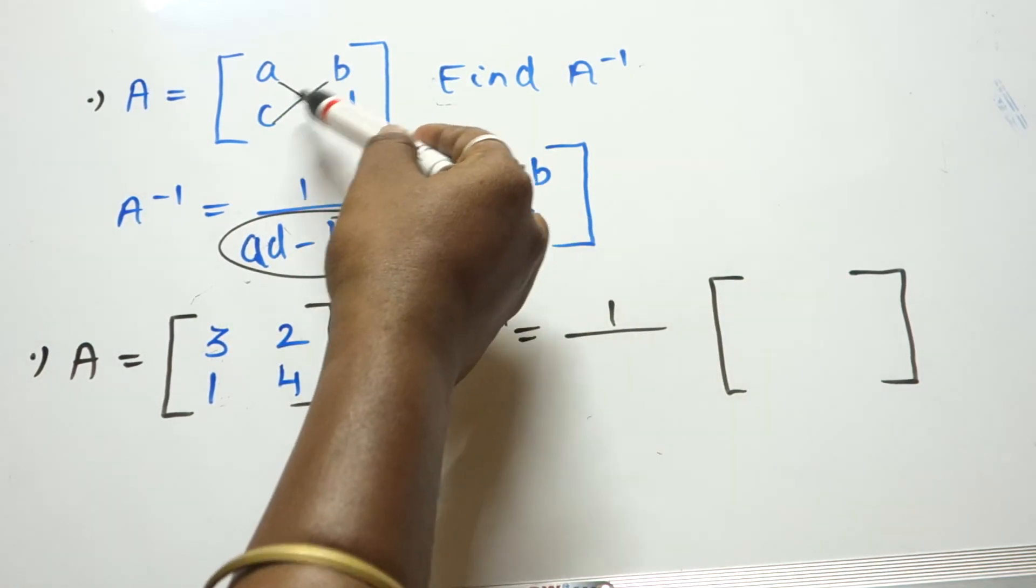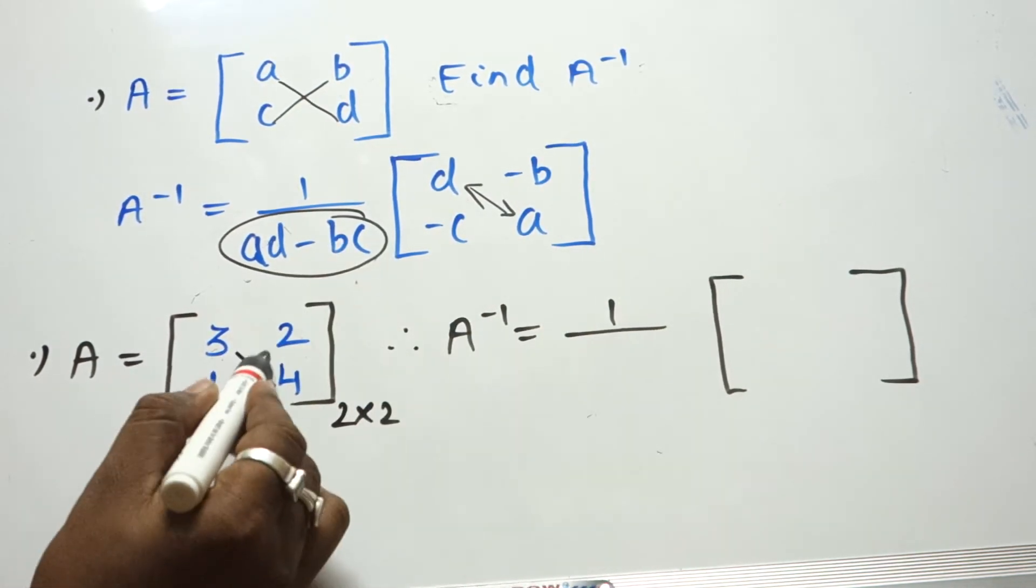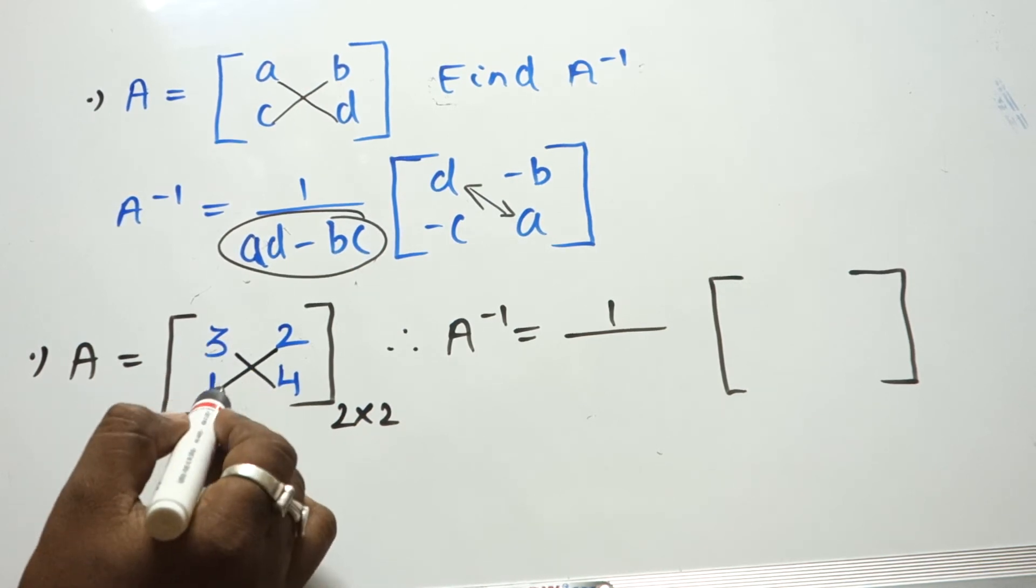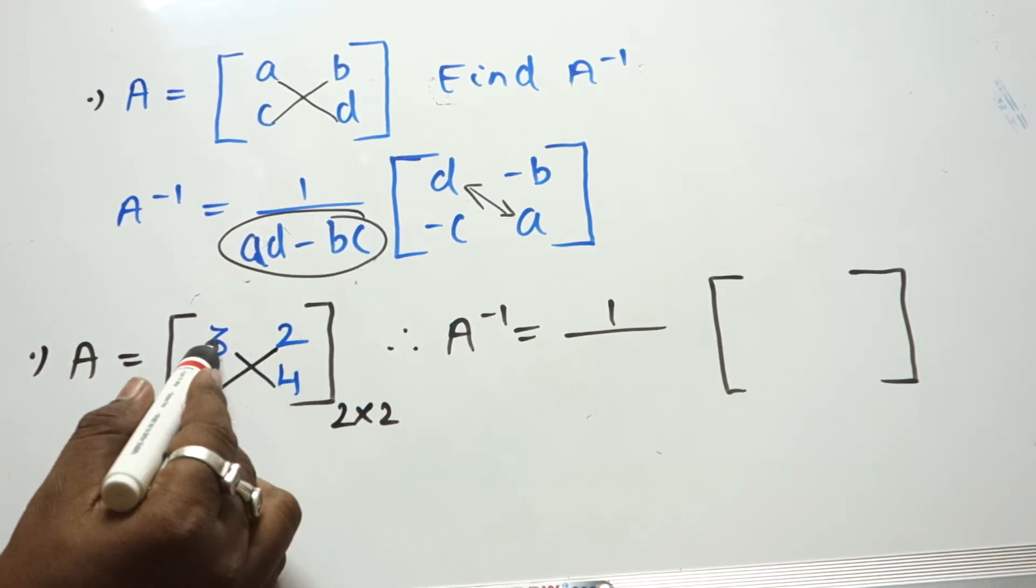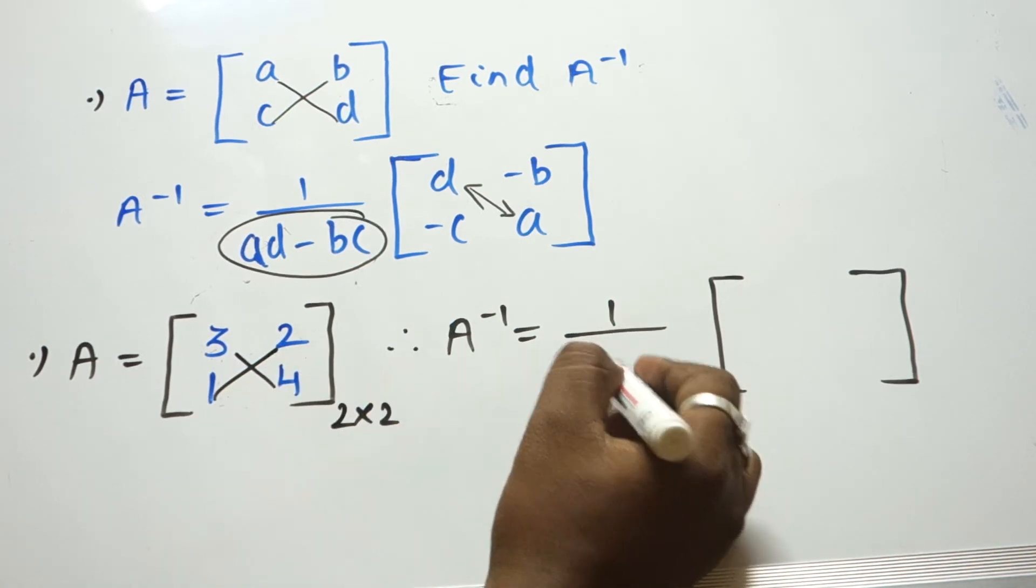Let's begin with the trick. AD minus BC: 4 times 3 is 12 minus 2 times 1 is 2, so 12 minus 2 is 10.